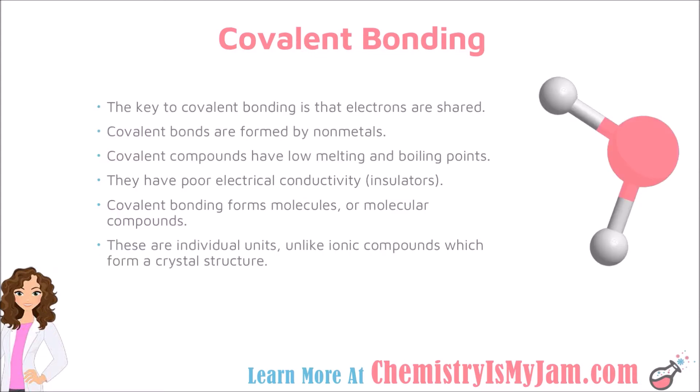The key to covalent bonding is that electrons are shared. Covalent bonds are formed between nonmetal atoms, which are mostly found on the right-hand side of the periodic table. In terms of physical properties, covalent compounds have low melting points and low boiling points. They tend to have poor electrical conductivity. Covalently bonded atoms form molecules or molecular compounds, which are individual discrete units.